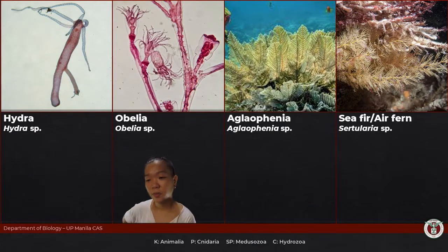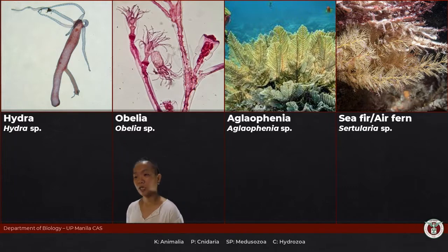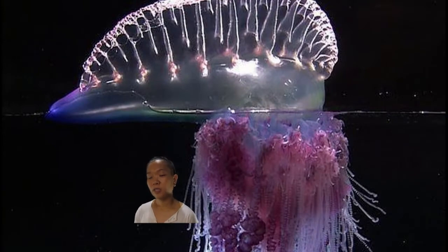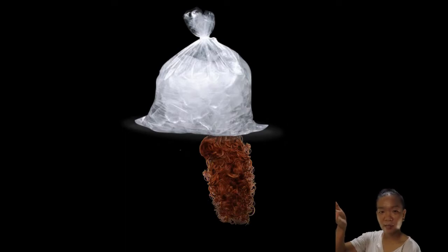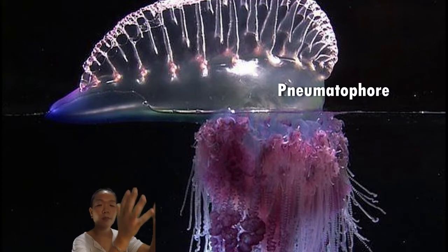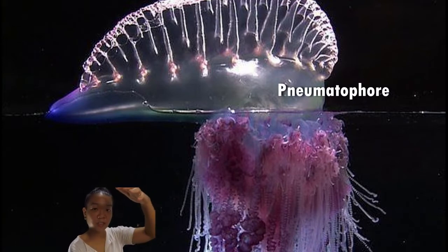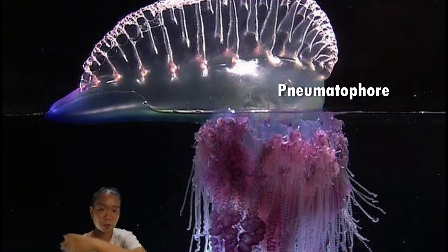Hydra is solitary, while Obelia is colonial, where you'll see the different polyp types like gastrozoids and gonozoids. One notable example is the Portuguese man-of-war, genus Physalia. It's like a plastic bag filled with air — that floating structure is called a pneumatophore — with tentacles dangling underneath. It helps the whole colony of polyps float and drift around.